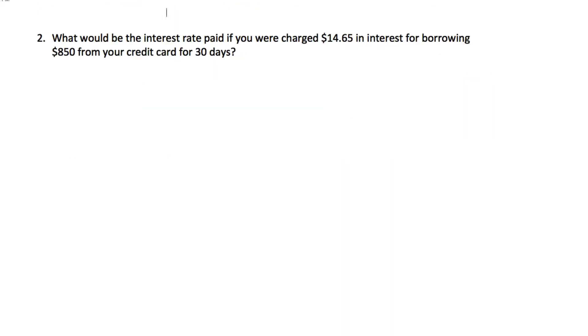Here's one more example. The question this time is what would be the interest rate paid. So that's what we're calculating, the interest rate. If we were charged $14.65 in interest, so that's my I, borrowing $850, which would be the starting amount or the principal, from a credit card for 30 days. And so our t would be, since t is time in years, that would be 30 over 365.